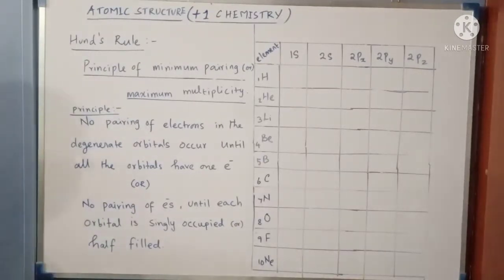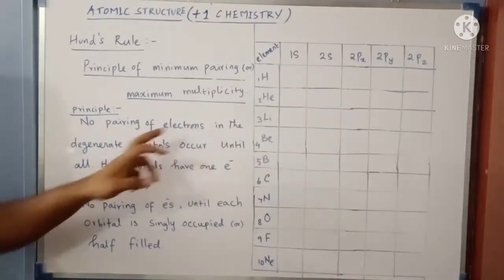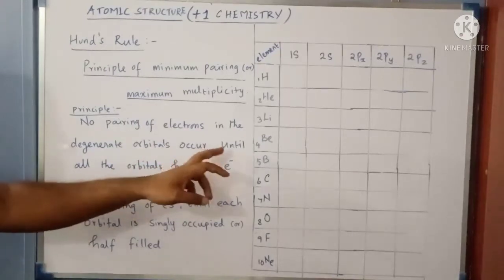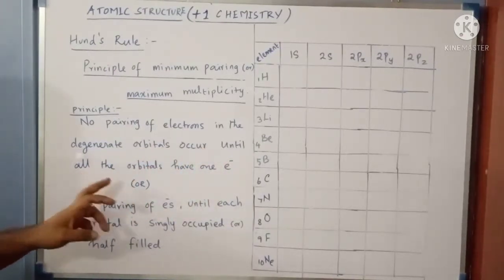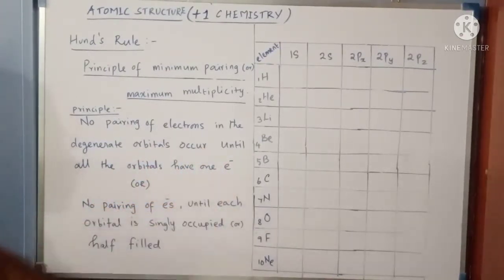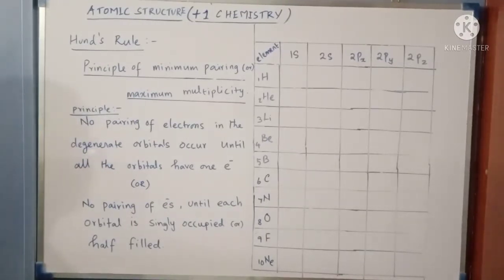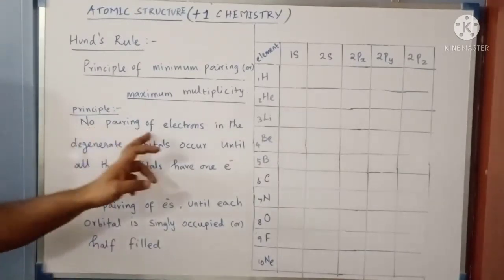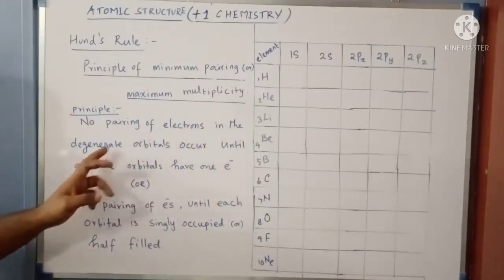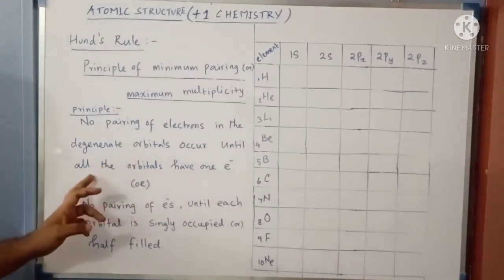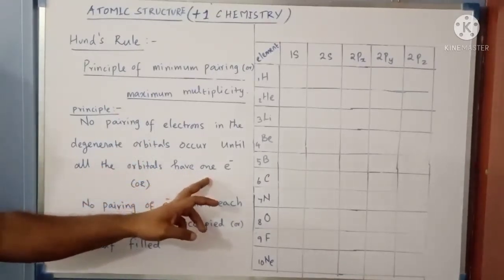So first, the principle: no pairing of electrons in the degenerate orbitals occurs until all the orbitals have one electron each. While filling electrons in degenerate orbitals, first we have to fill one electron each in all the orbitals, then only you can start pairing. That is the exact meaning of Hund's Rule — no pairing of electrons takes place in the degenerate orbitals until all the orbitals contain one electron each.